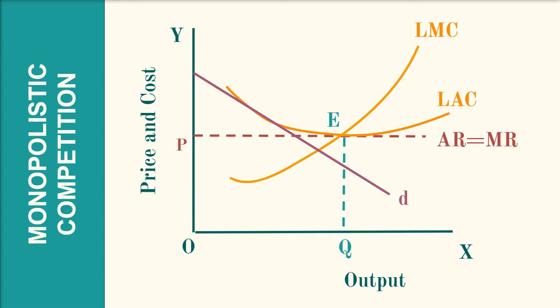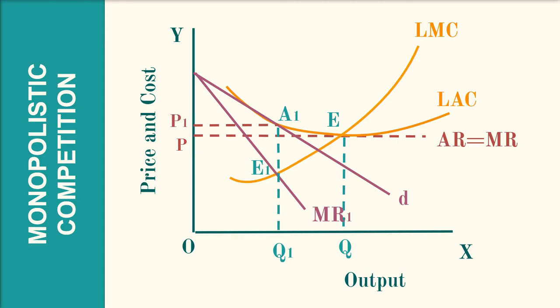The demand curve of the monopolistic competitive firm is D, and MR1 is its corresponding marginal revenue curve. LAC and LMC are the long run average and marginal cost curves. The firm is in equilibrium at E1 where the LMC curve cuts the MR curve from below. The optimal profit-maximizing output is OQ1, and the price is fixed at OP1 where it touches the demand curve at point A1. D is tangent to the LAC curve at point A1, which is to the left of the minimum point E.